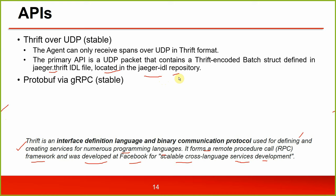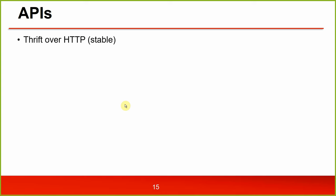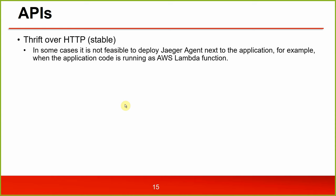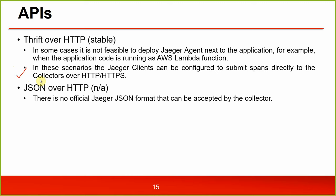Proto buffer via gRPC is stable - since Jaeger version 1.11, the official and recommended protocol between agent and collector is gRPC with proto buffer as defined in the collector.proto IDL file. Thrift over HTTP is also stable. In some cases, it's not feasible to deploy the Jaeger agent next to the application - for example, when the application code is running as an AWS Lambda function. In these scenarios, the Jaeger client can be configured to submit spans directly to collectors via HTTP or HTTPS.